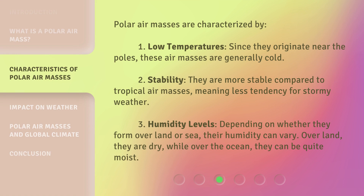Polar air masses are characterized by: one, low temperatures — since they originate near the poles, these air masses are generally cold; two, stability — they are more stable compared to tropical air masses, meaning less tendency for stormy weather; three, humidity levels — depending on whether they form over land or sea, their humidity can vary. Over land they are dry, while over the ocean they can be quite moist.